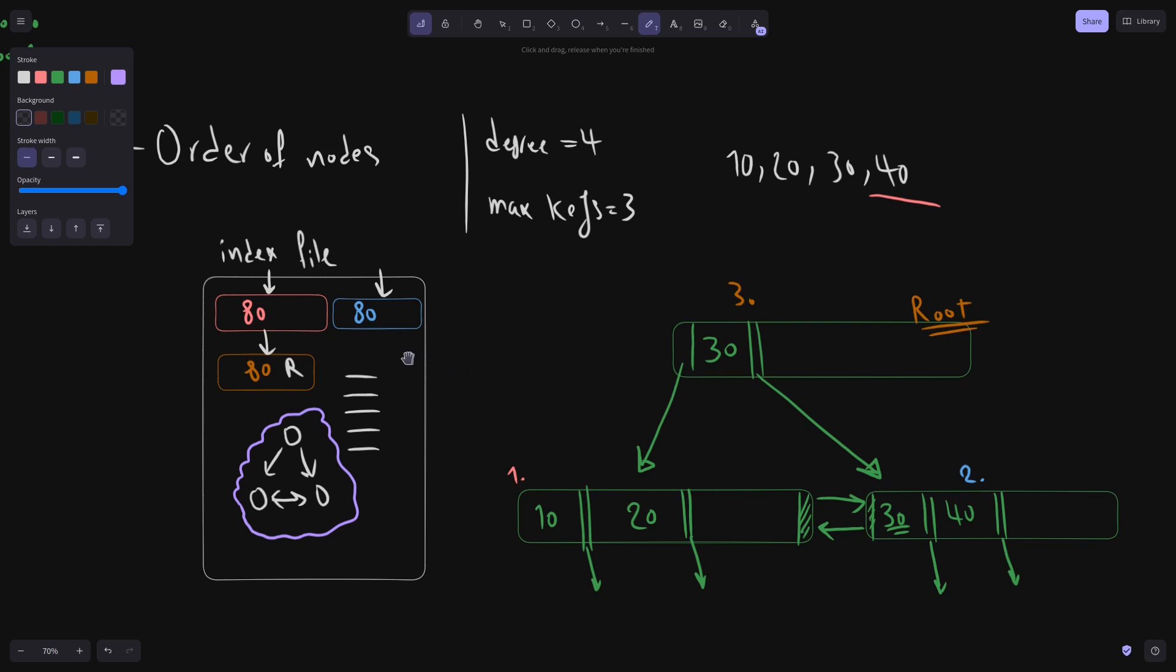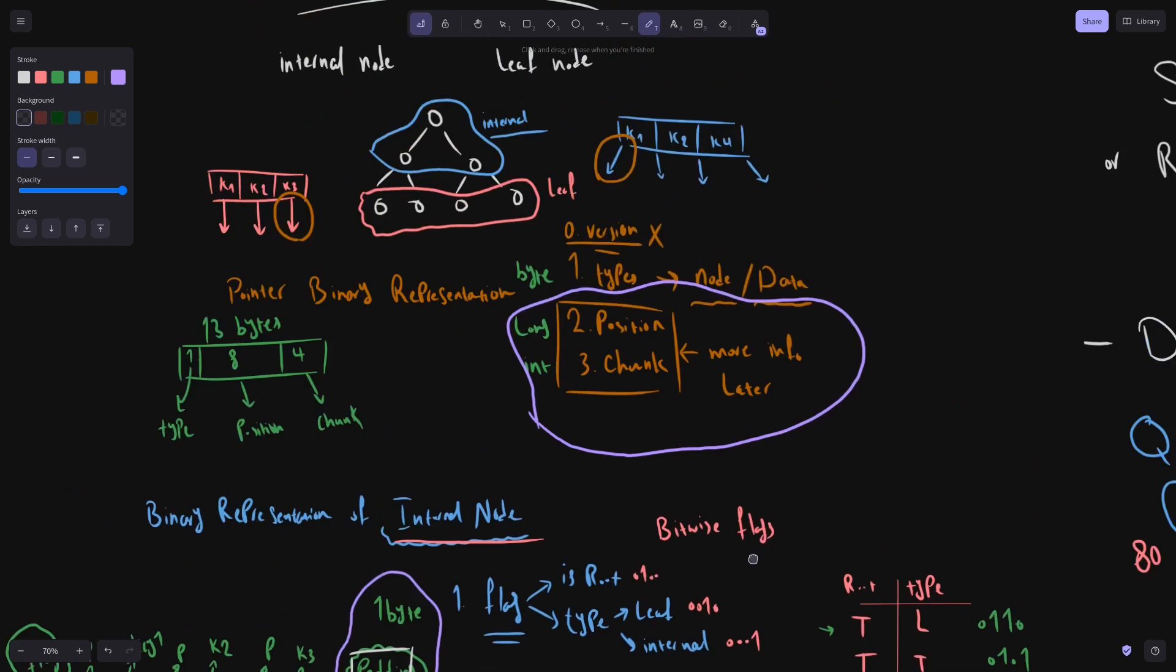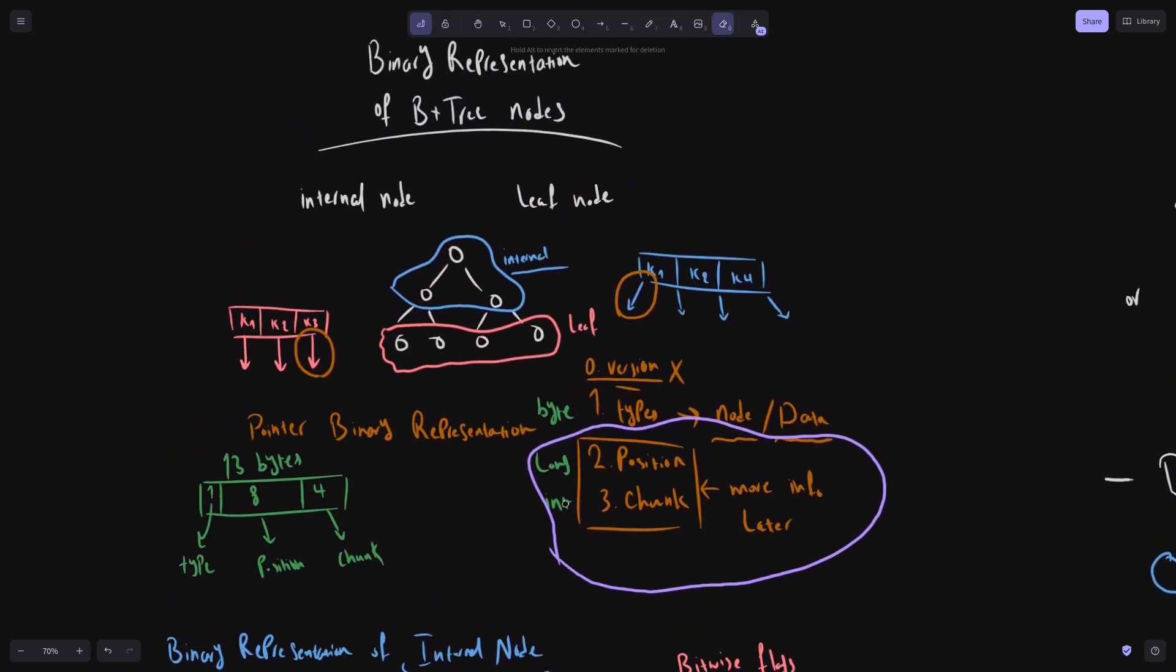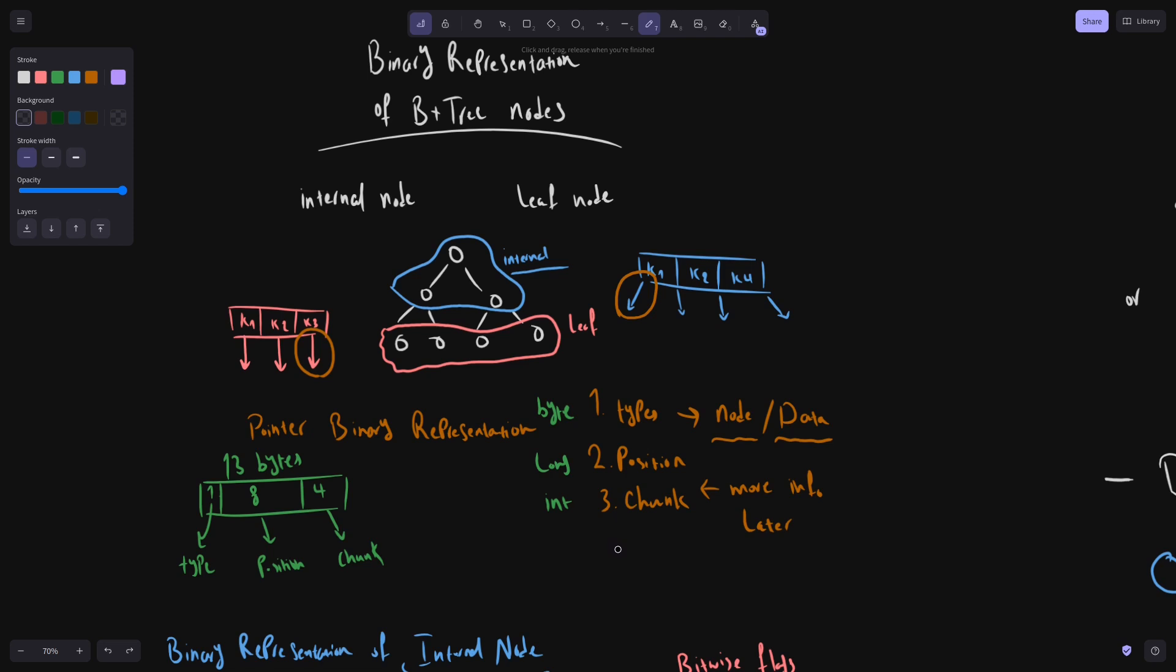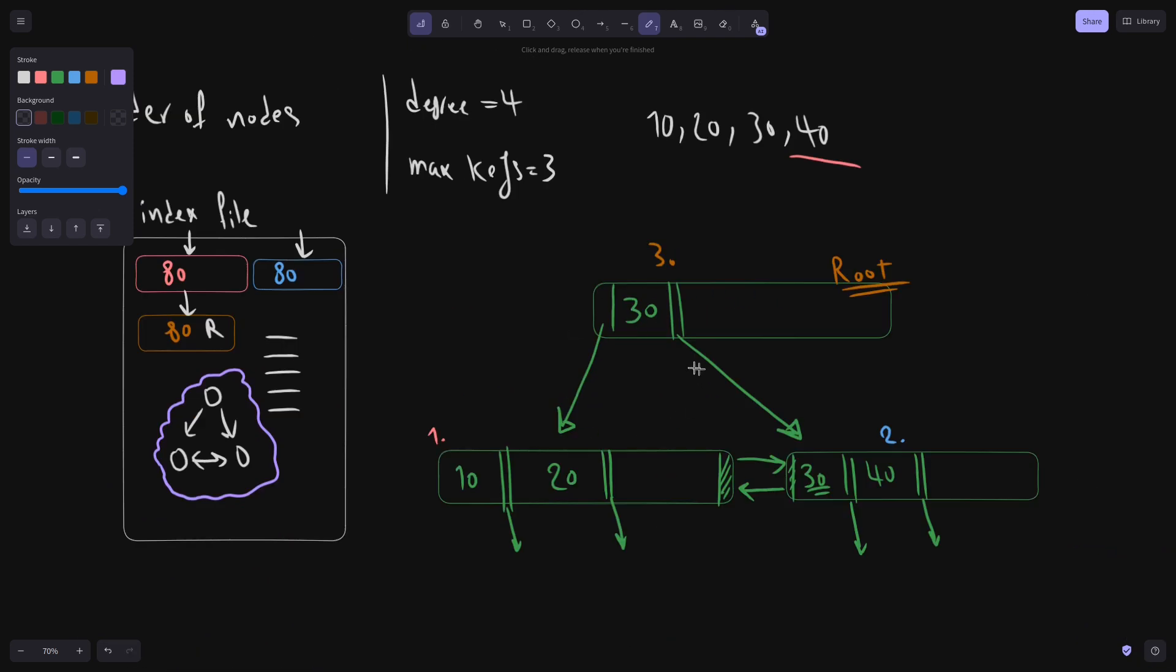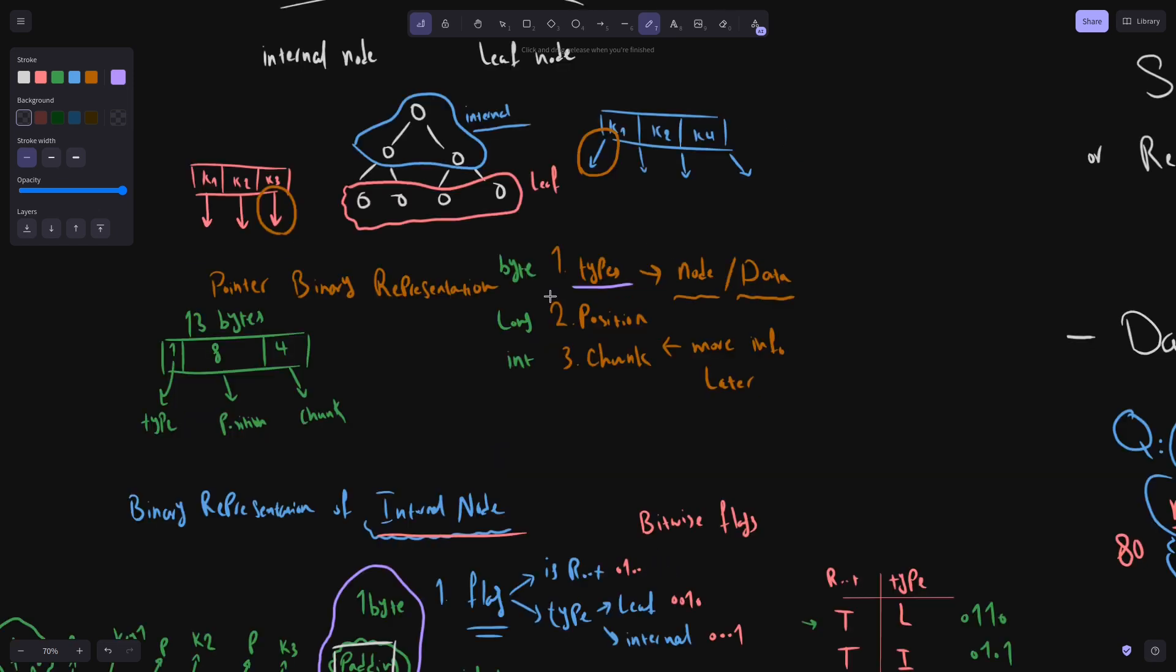But before we discuss that, let's make some things clear about pointers. In previous video, we saw that my implementation of a pointer has three elements. The first one is type. If we come back here, the pointers that go from internal nodes to other internal nodes or leaf nodes have type of node. And pointers in leaf nodes that point to the location of data on disk are of type data.